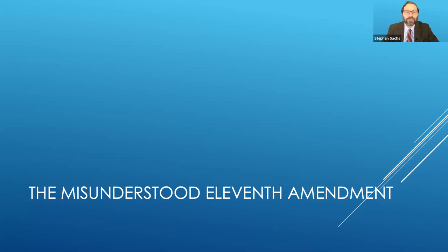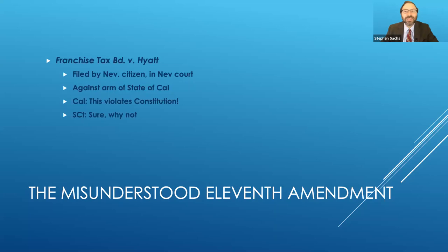The impetus for this paper was a case that we filed an amicus brief in called Franchise Tax Board versus Hyatt. In that case, it was filed by a Nevada citizen in a Nevada state court against what the party described as an arm of the state of California. And California said, this violates the Constitution. We have a constitutional right of sovereign immunity. And the Supreme Court said, sure, why not?